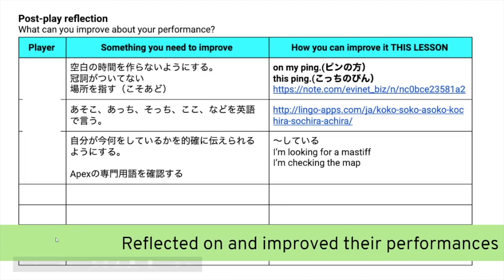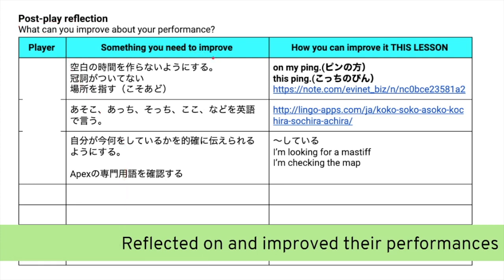Following the transcription and analysis, they complete a post-play reflection activity. My intention was for students to look at their performance, think about how well they were speaking English during their play session, find something specific they can improve, and write how they could improve it within the next lesson — not something vague like 'I need to improve my English,' but something very specific, possibly with a website or link to find out more. You can see an example of a group that has done exactly that.